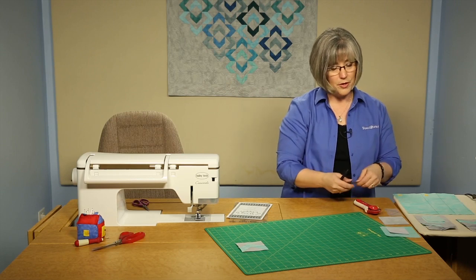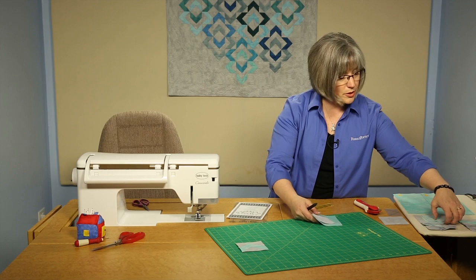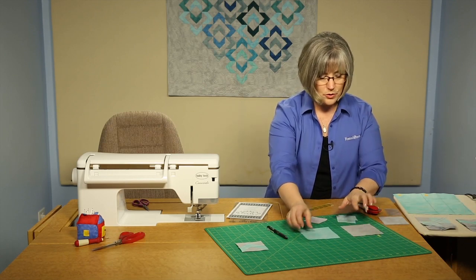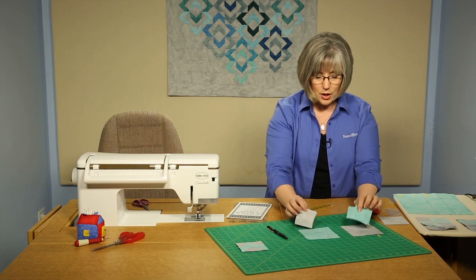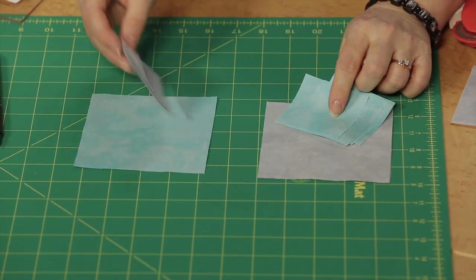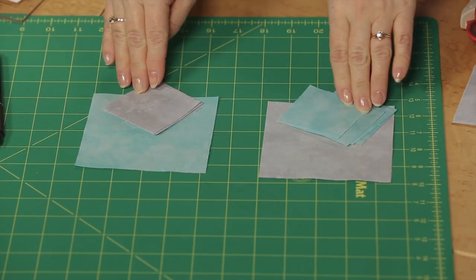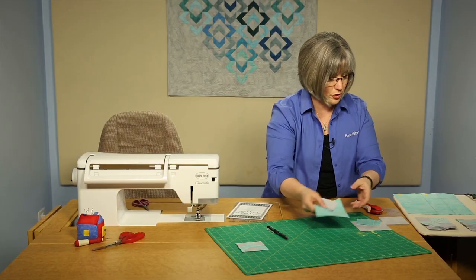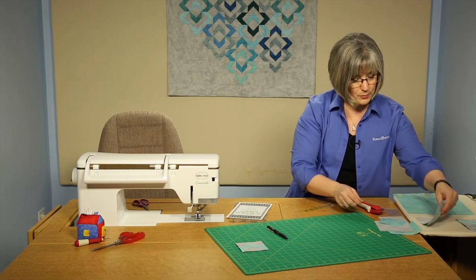We're going to be using a method where you're creating two different combinations. We've got a turquoise background and a gray background, and you're going to match up with those smaller squares of the opposite color. So it's a kind of a mismatch—large, small, large, small. From those we are going to create the flying geese blocks. Let's walk through those steps.